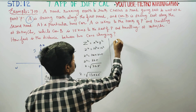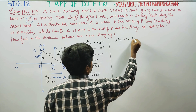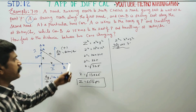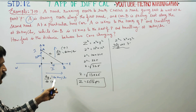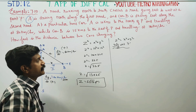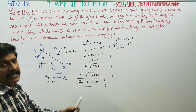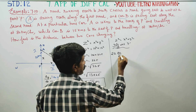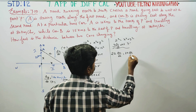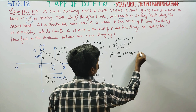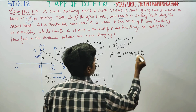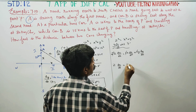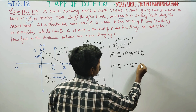Again, using the same formula Z² = x² + y², I am going to differentiate with respect to T. We differentiate with respect to T because the speeds are given per hour — the rate of change is velocity. Differentiating: 2Z · dZ/dt = 2x · dx/dt + 2y · dy/dt. Cancelling the 2s: Z · dZ/dt = x · dx/dt + y · dy/dt.